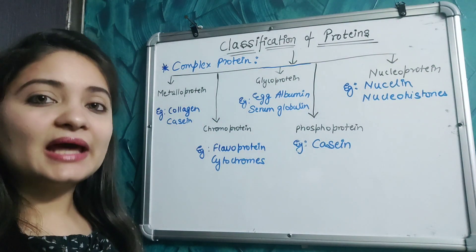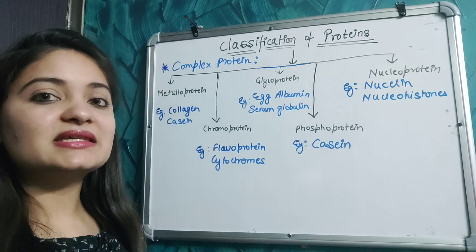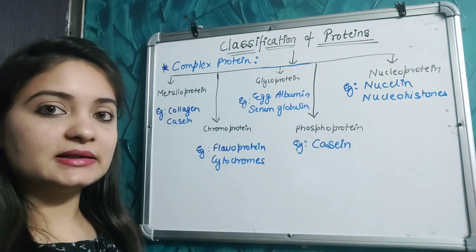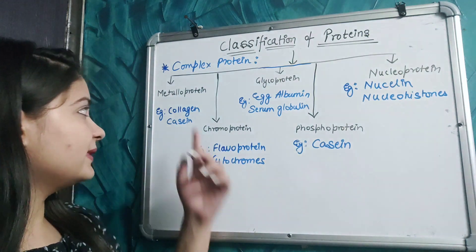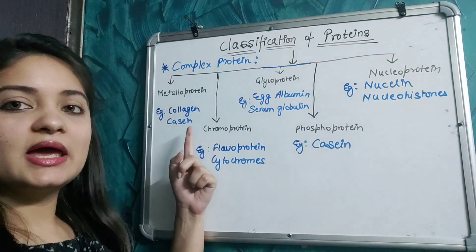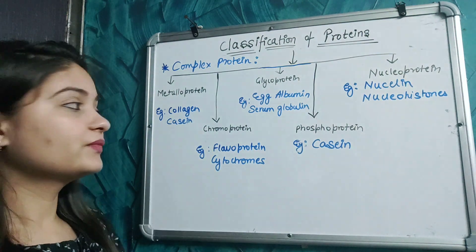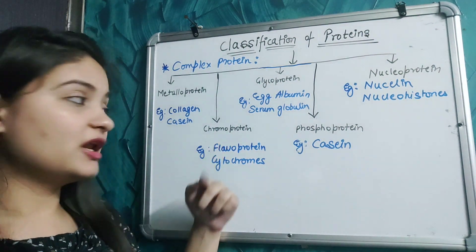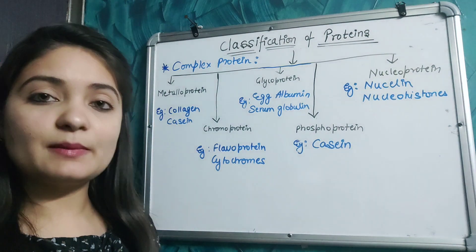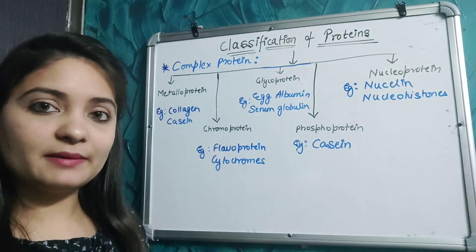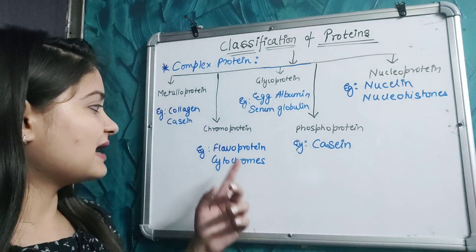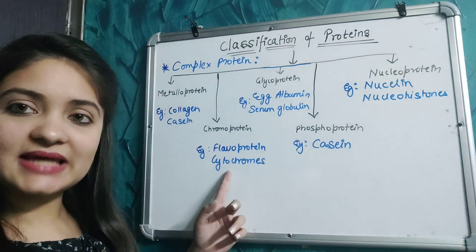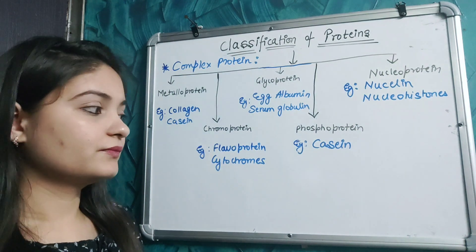Now let's talk about further classification based on complex proteins. First is metalloprotein — proteins linked to metals, for example collagen and casein. Second is chromoprotein — proteins linked to a colored pigment, for example flavoprotein and cytochromes.